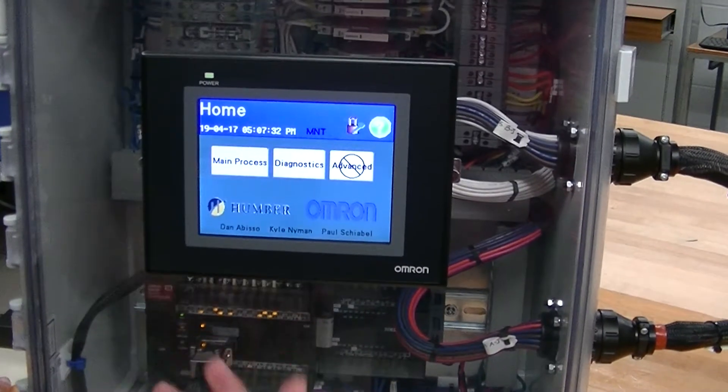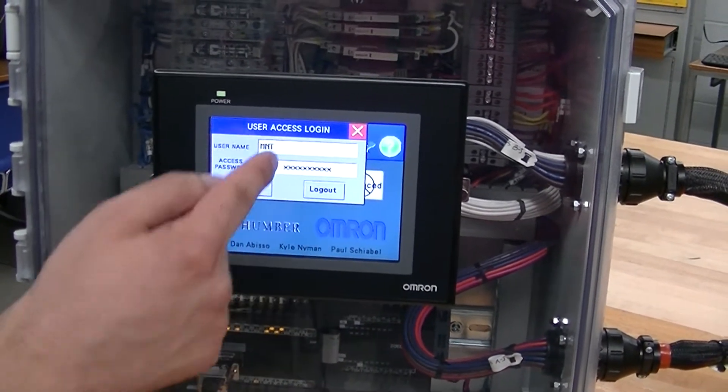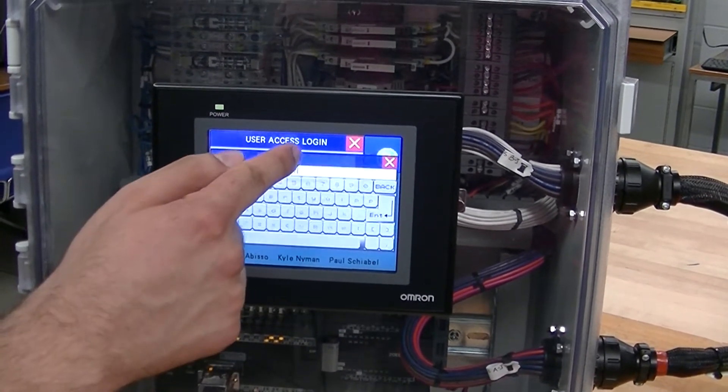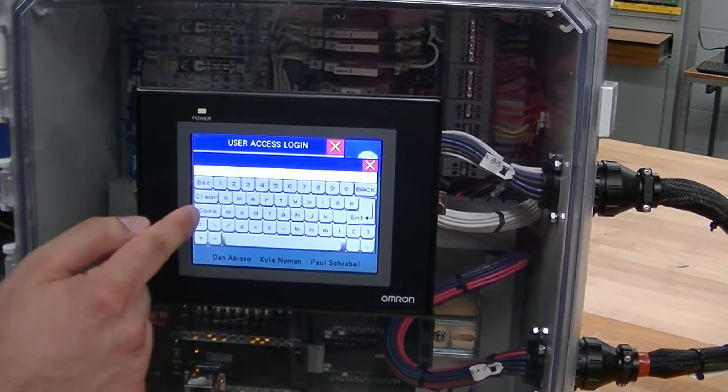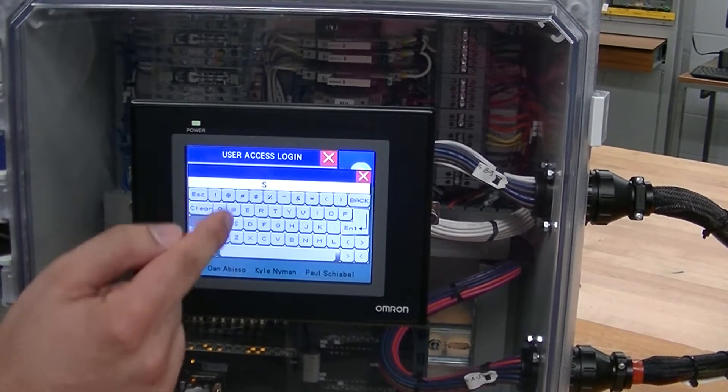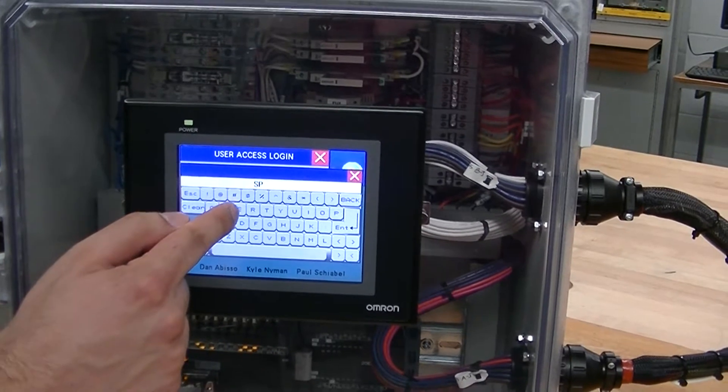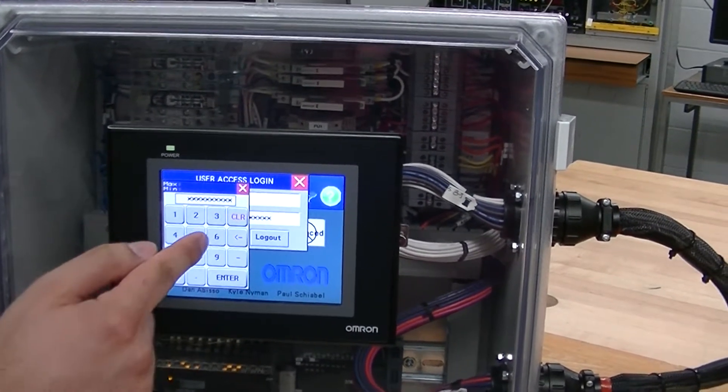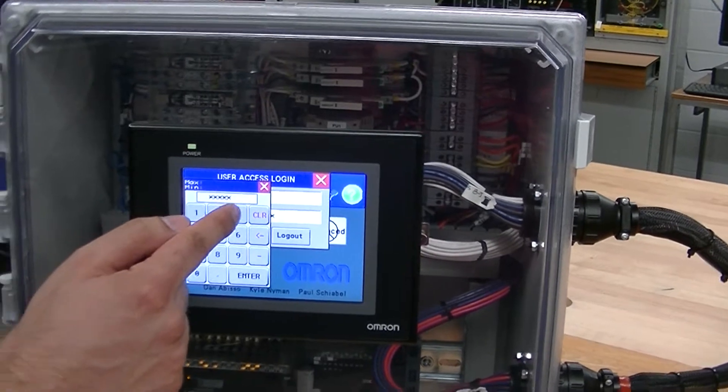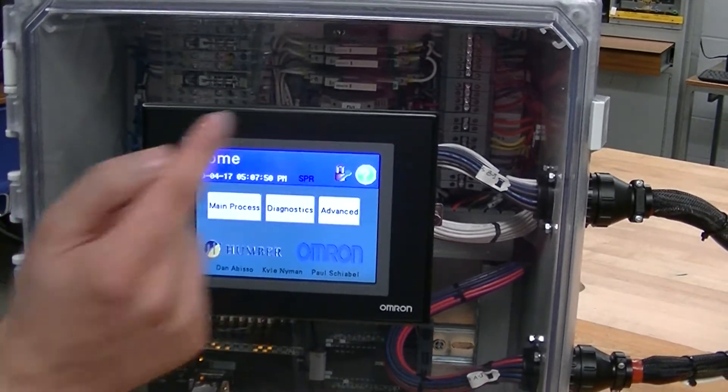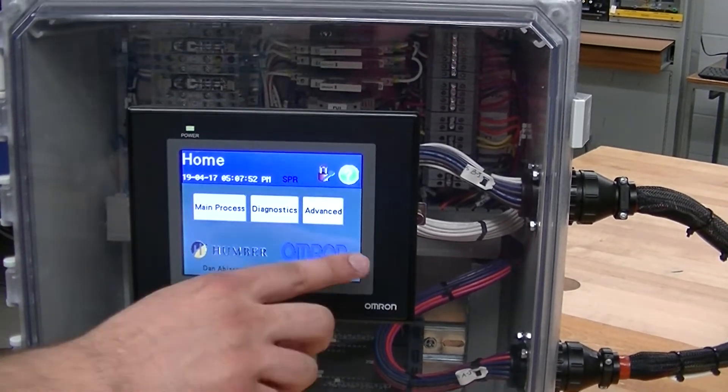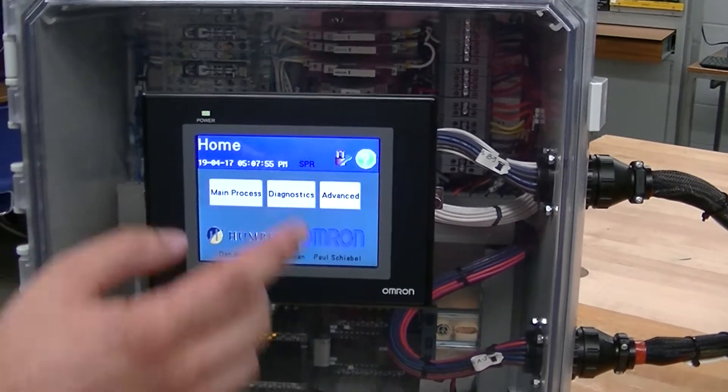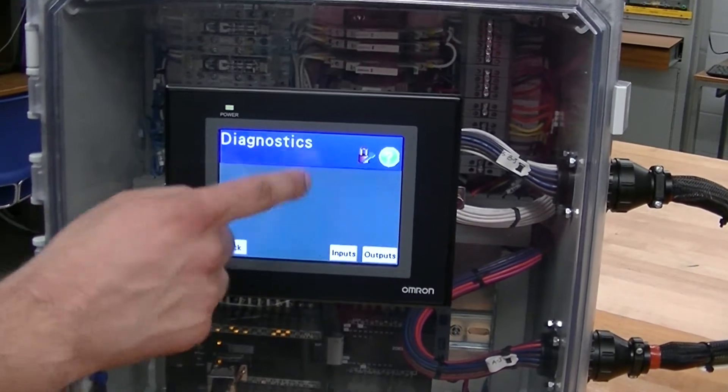To simply log in as supervisor, we go back to the login screen, take away the maintenance username and we log in as a supervisor. Supervisor login is just SPR and we insert the password which is just six threes. Once we are logged in as supervisor, the advance button becomes available. We will get into that, but first we're going to demonstrate the diagnostics.